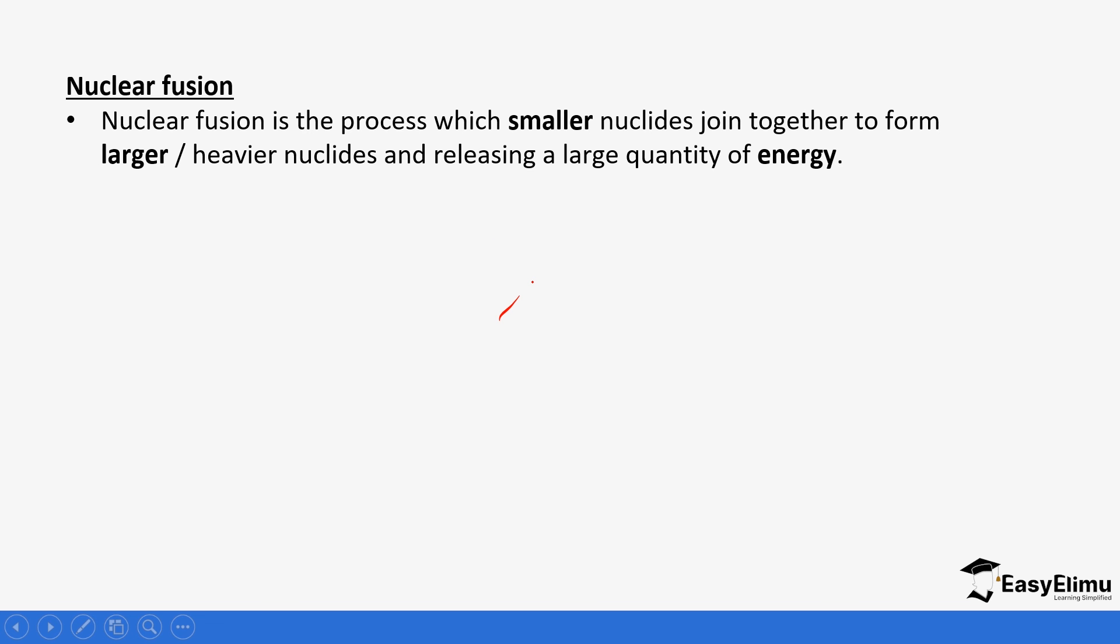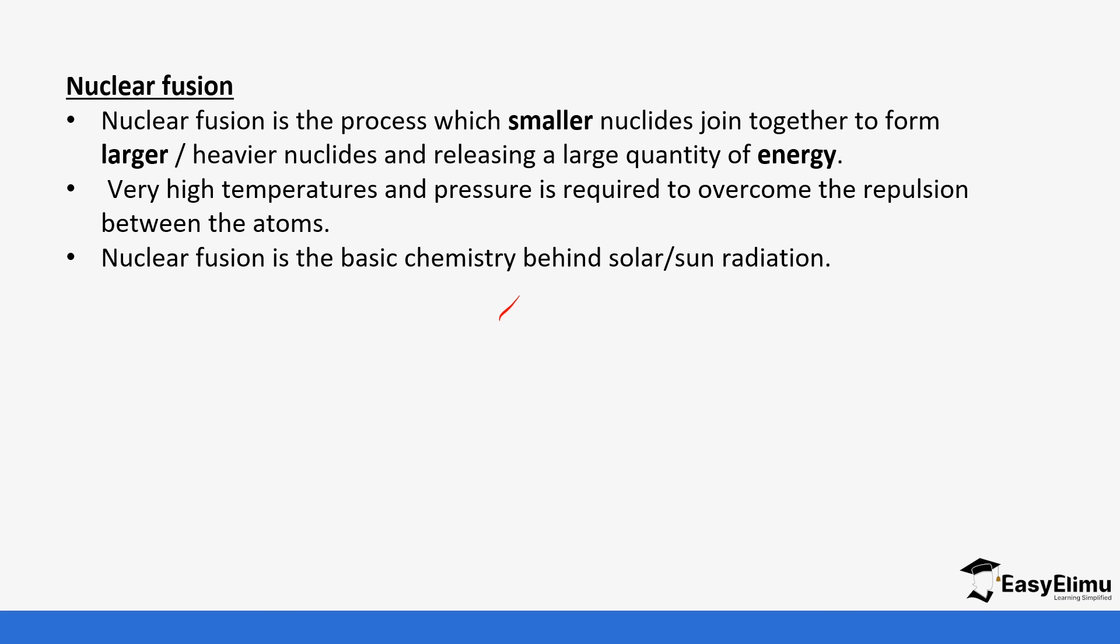So we go to nuclear fusion. So for the nuclear fusion, nuclear fusion is a process which smaller nuclides join together. So you can see before we were bombarding and then they break but in this case now we are joining together small nuclides to form bigger ones and they release large quantity of energy. So very high temperatures and pressures is required to overcome the repulsion between the atoms. So nuclear fusion is a basic chemistry behind solar radiation.